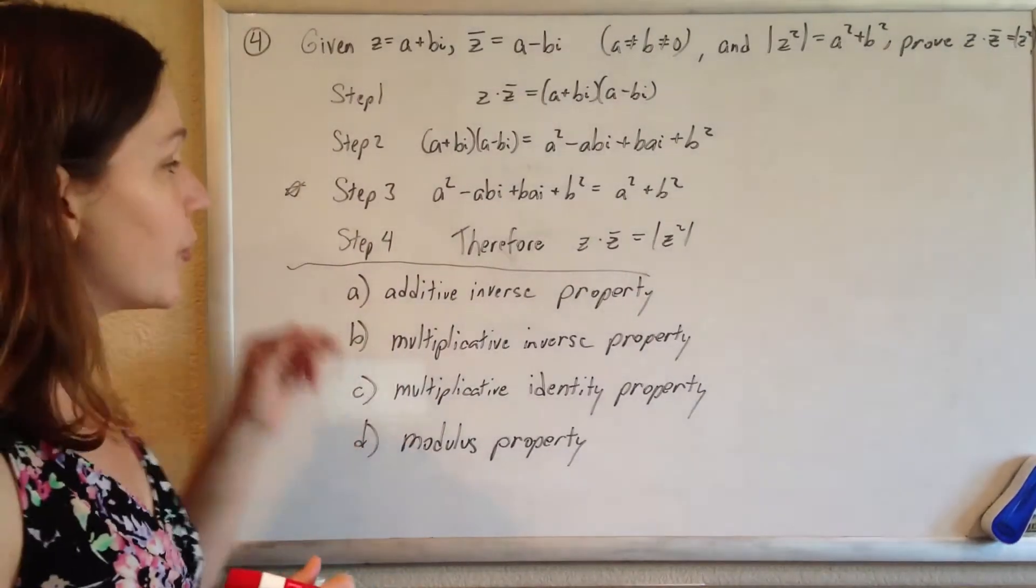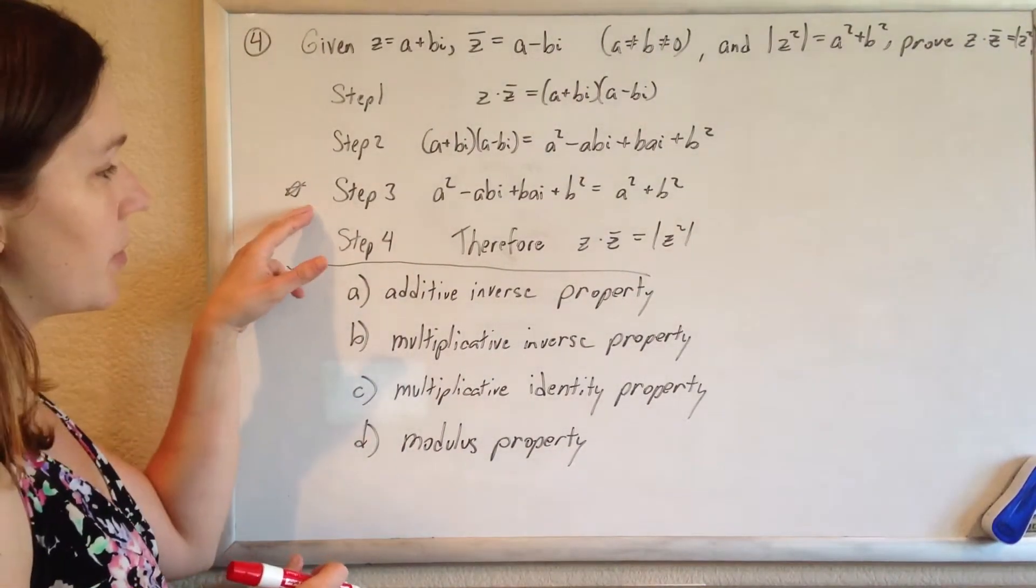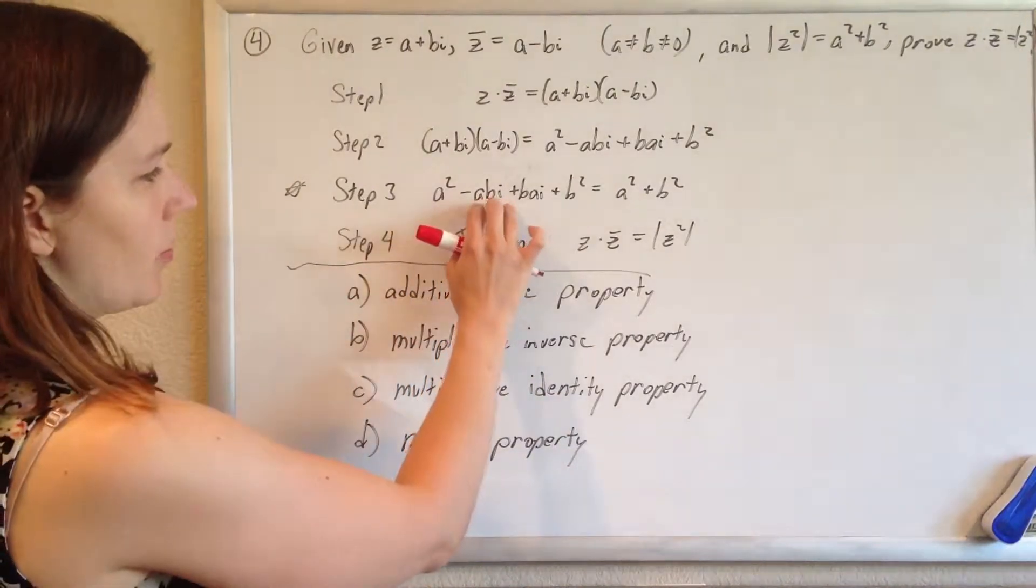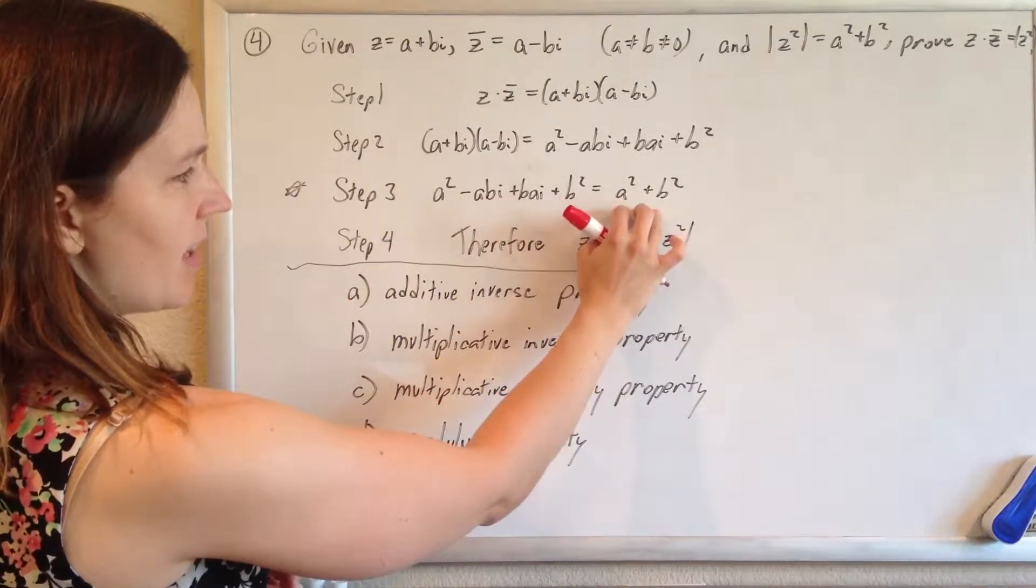Okay, so they give you this whole proof, but all they care about is what happens in step 3. So we look at step 3, how'd they go from this side to that side?